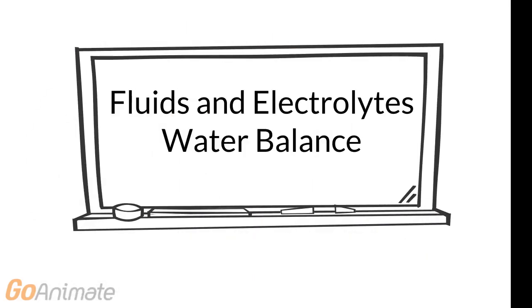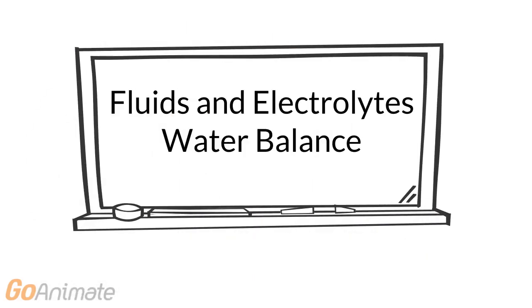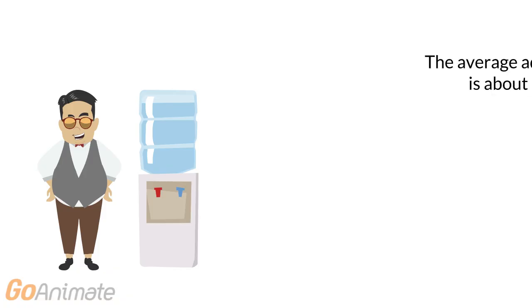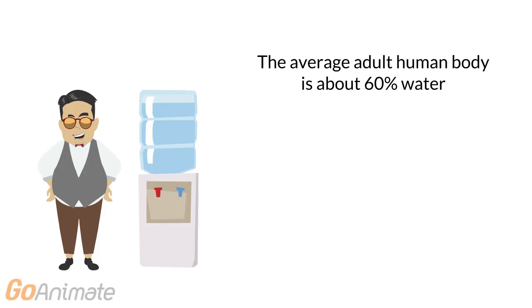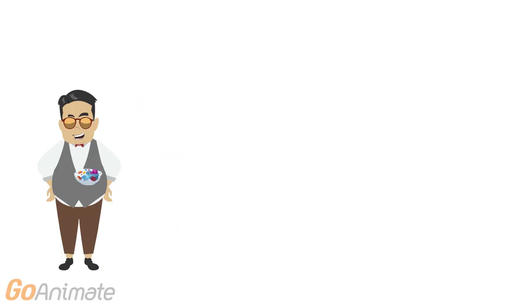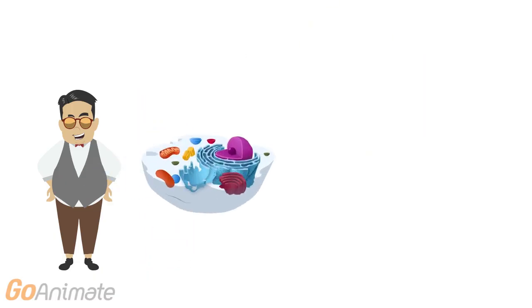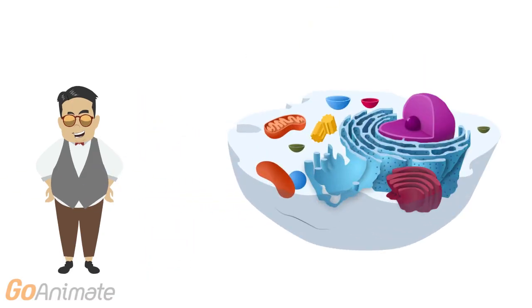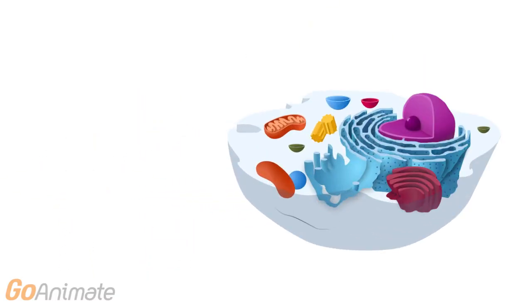Let's learn about fluids and electrolytes, water balance. The average adult human body is about 60% water. The water is located in two distinct areas, or compartments in the body.